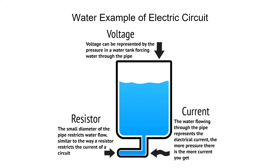Before we begin our discussion on Ohm's Law, let's review three properties of an electrical circuit involved in the analogy between an electrical circuit and water flow. Here we see a drawing of a water tank with a pipe at the bottom. The pressure at the bottom of the tank is analogous to voltage. Voltage does not flow but is measured at a point, like the pressure at the bottom of the tank. The more water pressure, the more water that flows through the pipe.